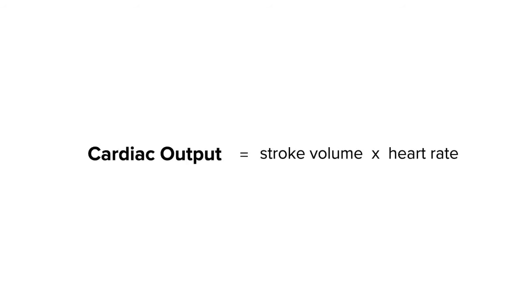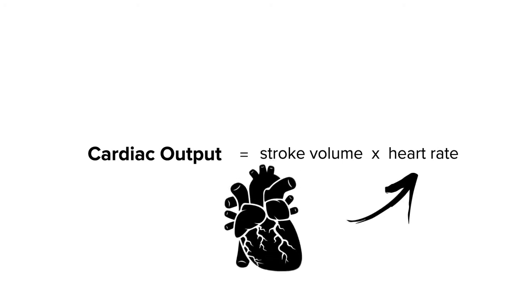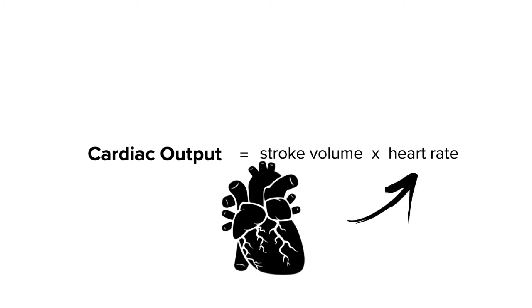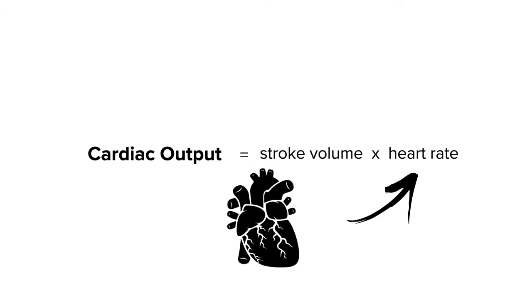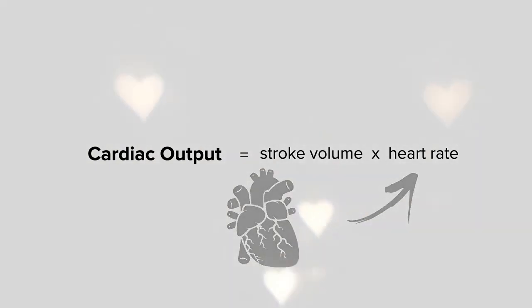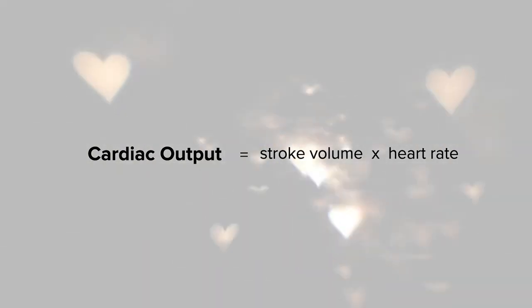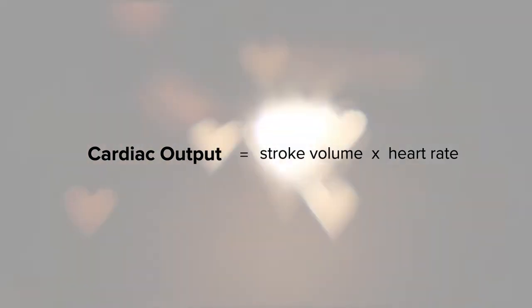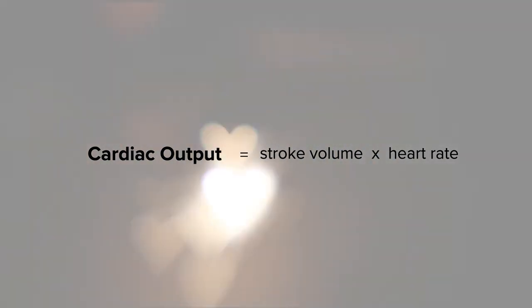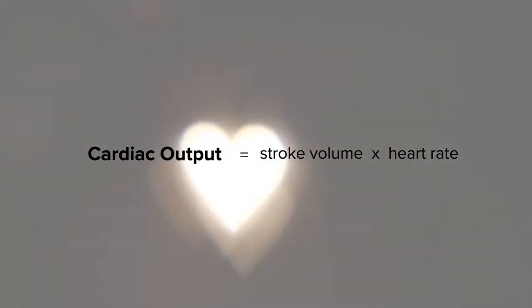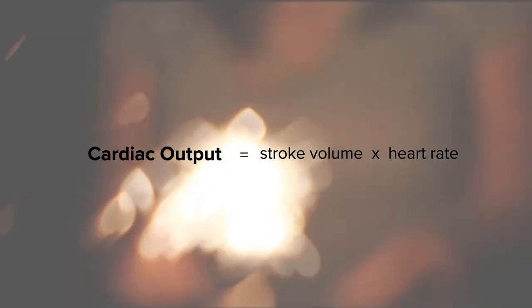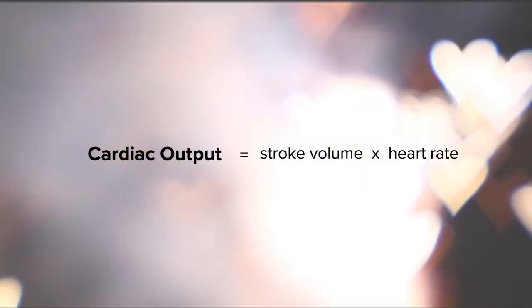Vasopressors and inotropes also increase cardiac output by increasing heart rate, or chronotropy. By increasing your heart rate, you pump more blood out of the heart per minute, therefore increasing your MAP as well. So you have a 2 for 1, at least at the level of the heart, to increase or maintain a mean arterial pressure — either by increasing stroke volume through contractility or inotropy, and by increasing heart rate or chronotropy.